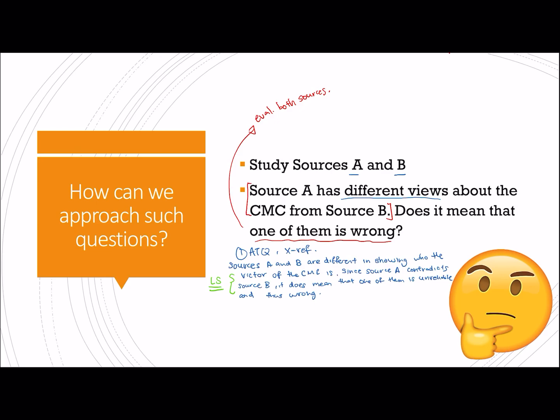Then I will go on to explain the sources individually. Source A states blah blah blah and therefore this shows that USA was the victor of the CMC, whereas source B states and shows that the USSR was the victor of the CMC. Then we'll go on to our next step.